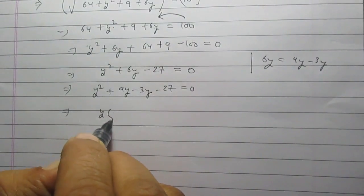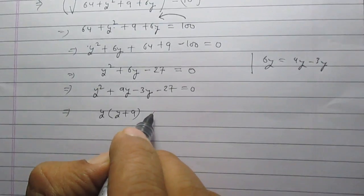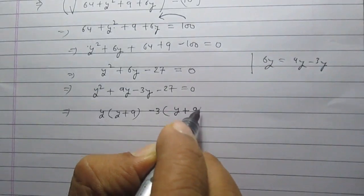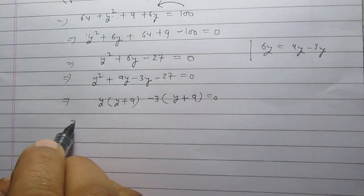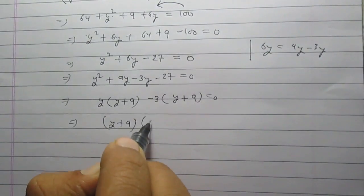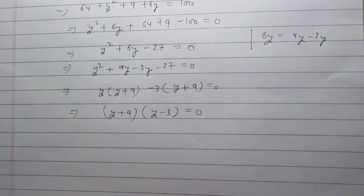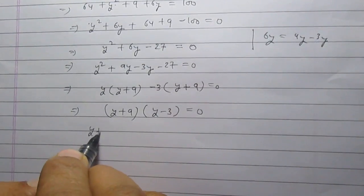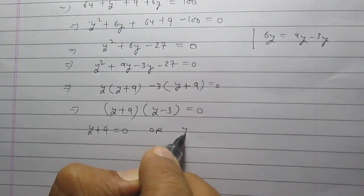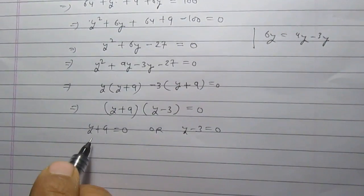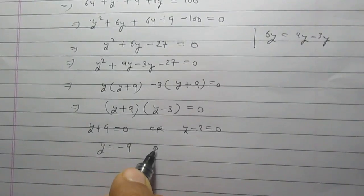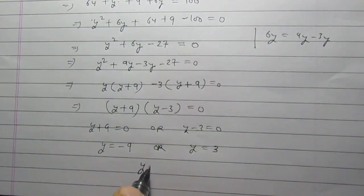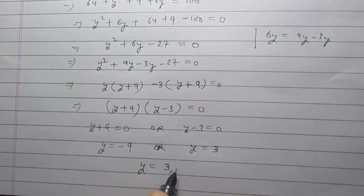We can write this as y(y + 9) - 3(y + 9) = 0. Since (y + 9) is a common factor, this becomes (y + 9)(y - 3) = 0. Since the product of two terms is zero, either y + 9 = 0, giving y = -9, or y - 3 = 0, giving y = 3. So the two values of y are 3 and -9.